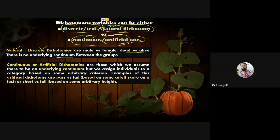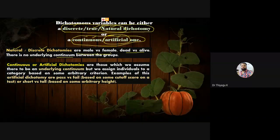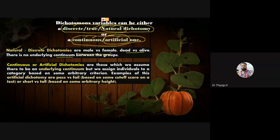In a classroom with only two groups — male and female — we can divide naturally: that is called natural dichotomy. However, if instead of dividing by male and female we divide the same classroom by pass and fail, that is called artificial. We fix a mark — for example, those scoring above 50 are pass, below 50 are fail. In this way the investigator divides the group into two in an artificial manner.